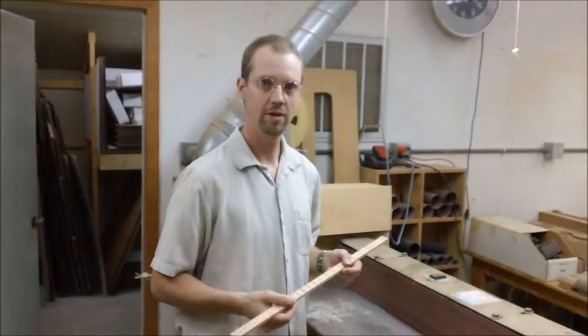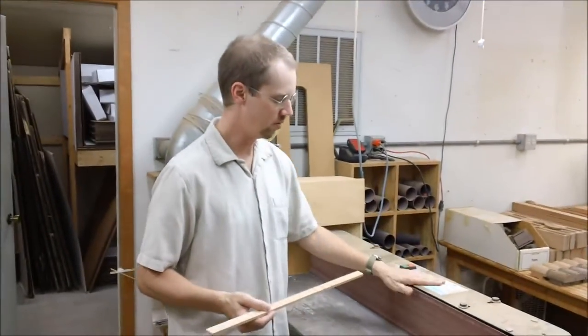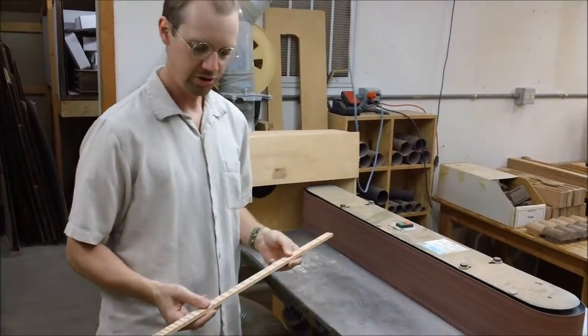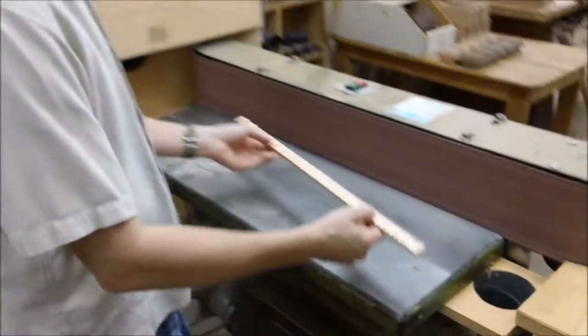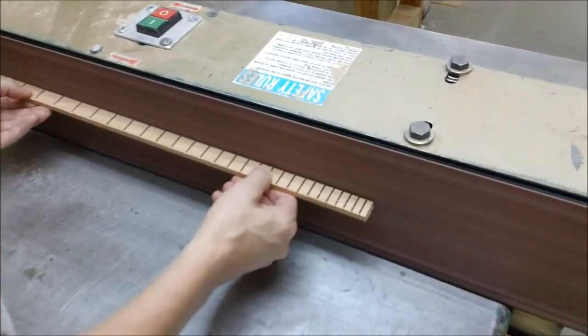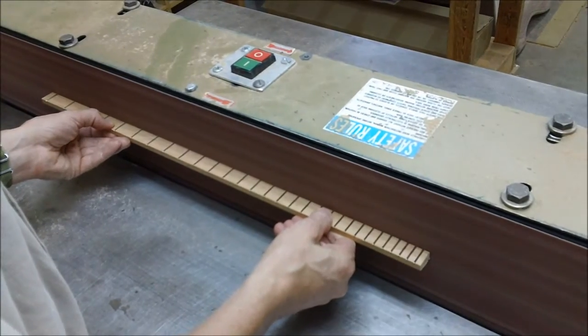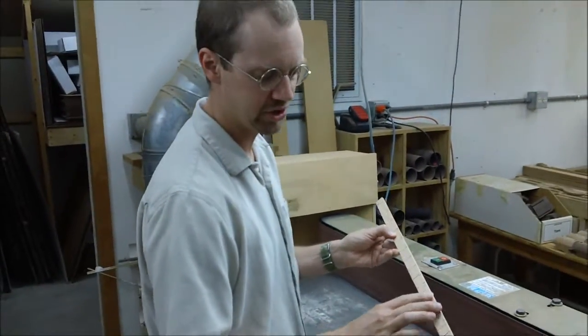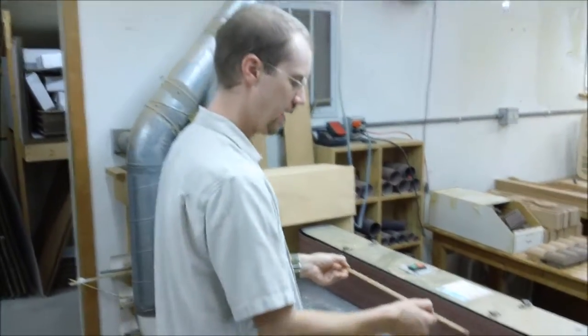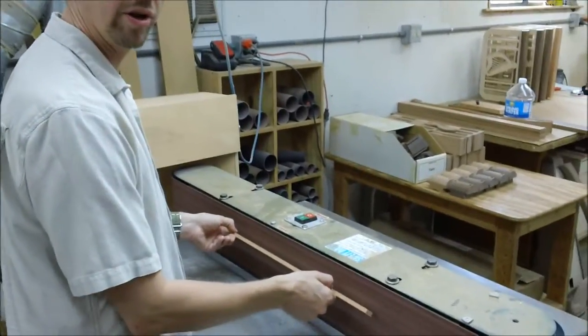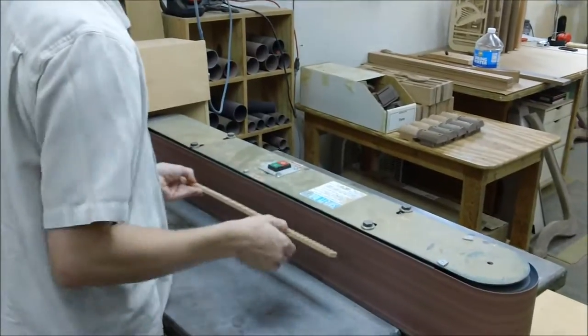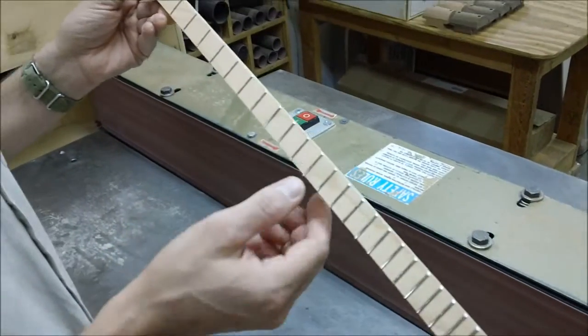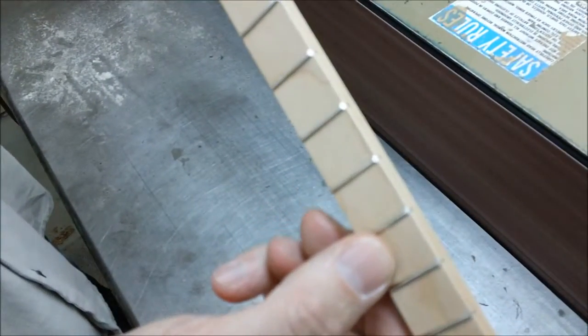So this is our big belt sander here. This is one way to do it. You just hold this up on the edge like this. Now I also want to put a slight bevel on this, so I'm going to put this on an angle on the edge sander as well. That'll give a nice little bevel and sand them all flush.